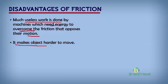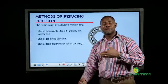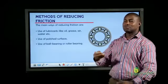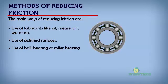Another disadvantage is that friction makes objects harder to move. When you want to push an object, the amount of force you apply is proportional to the friction between the object and the surface of the ground. So how can we reduce friction? We're going to look at the main ways of reducing friction, one after the other.